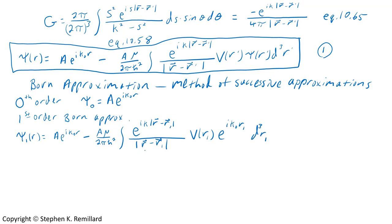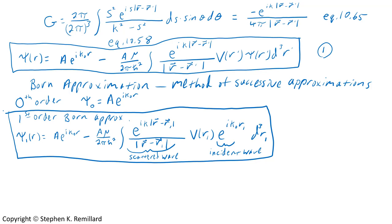Important factors inside this integral include the first one—you recognize that's a spherical wave. This is our scattered wave. There's a potential that is inciting the scattering, and then there's the incident wave. You can substitute this back into the integral and have the second order Born approximation. We're going to stop at the first order.